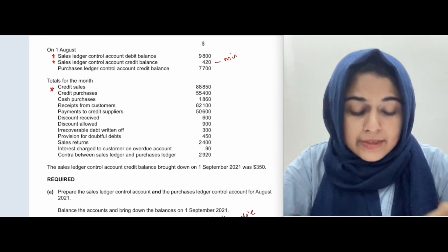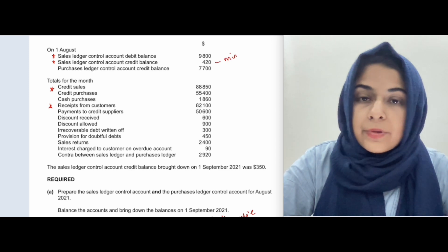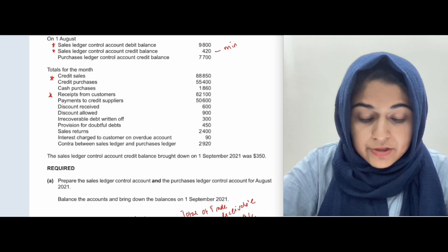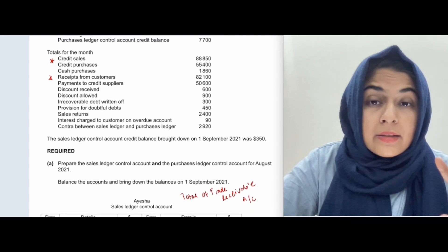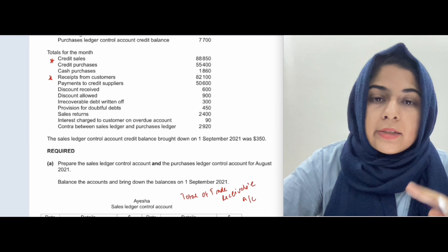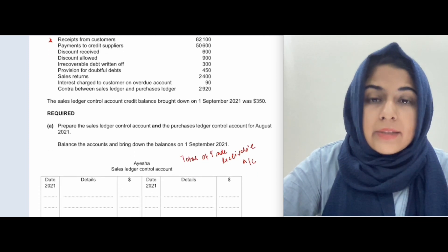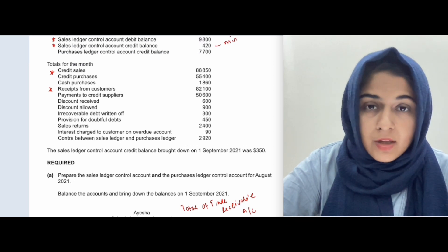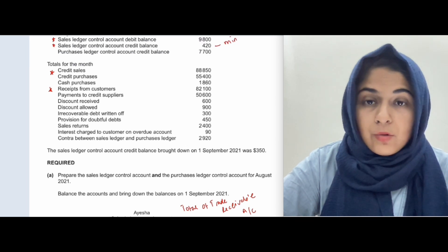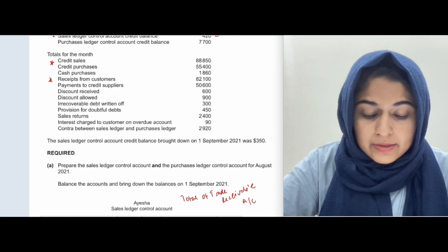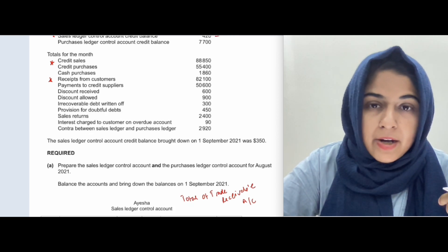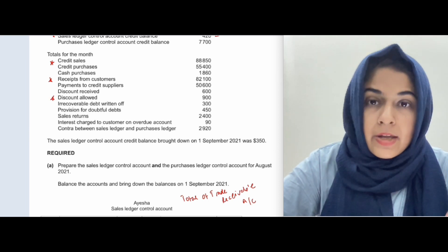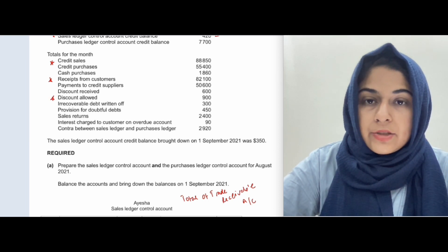Credit sales is important. Then there are receipts from customers — those go into the sales ledger control account because they are customer-related. In the sales ledger control account we record customer-related items. Discount allowed — the discount you allow to customers — also goes into the sales ledger control account.